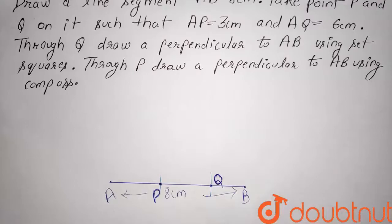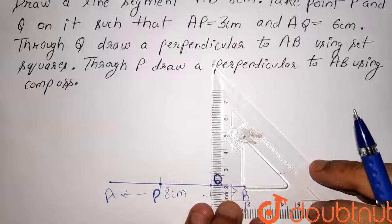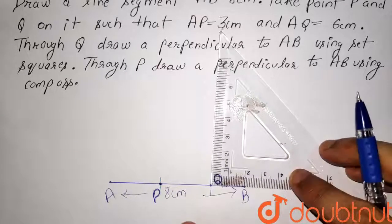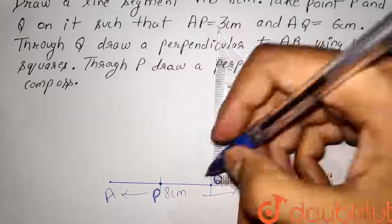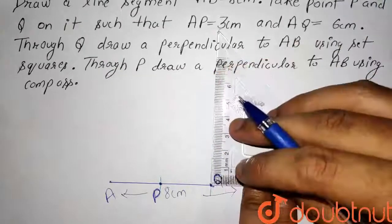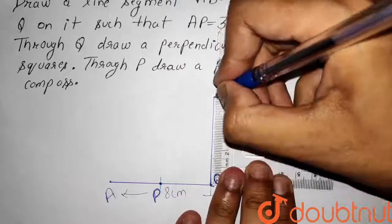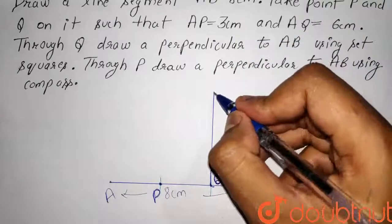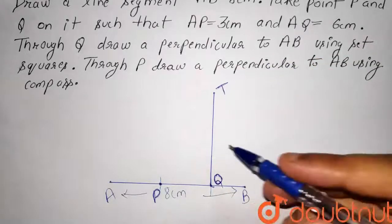This point is Q. Now, through Q, we have to draw a perpendicular to AB using a set square. So, this is a set square. Taking center at Q, we will adjust the set square and draw an angle of 90 degrees. Let this point be T, so QT is the perpendicular to AB through point Q.